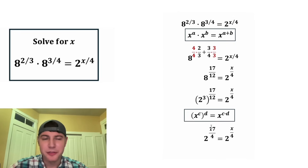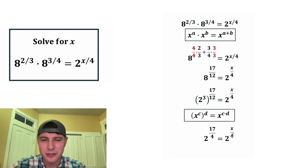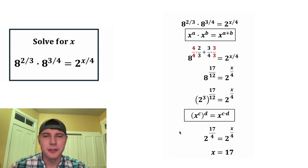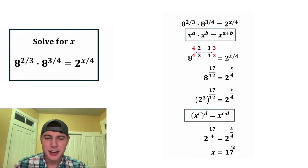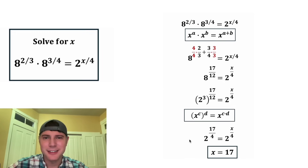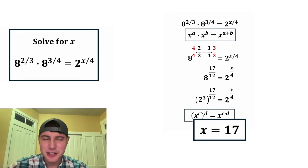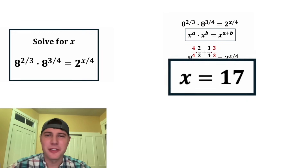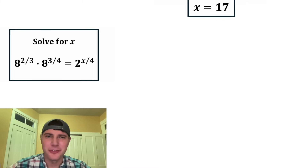So now we have two to the power of 17 over four equals two to the power of x over four. This will only be true if x is equal to 17. And this is the answer to our question. Let's put a box around it. How exciting! I think day two of our Algebra February calendar was fun.